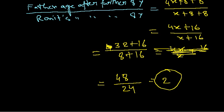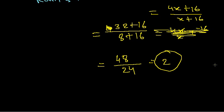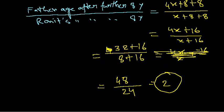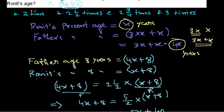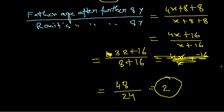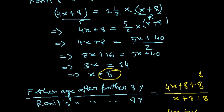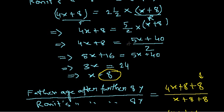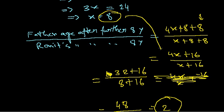The ratio is 2, and the first option is correct. The take-home message: read the information carefully, assume a single age as x, express the other age in terms of x, set up the equation, solve for x, then substitute to answer what is asked. That's the systematic approach for age problems. Hope that's helpful, thank you.